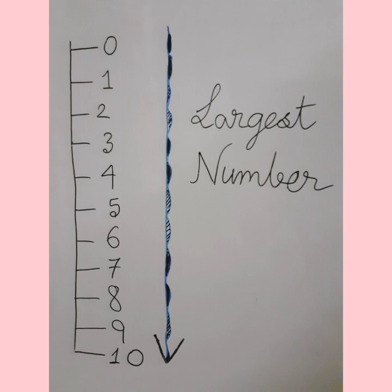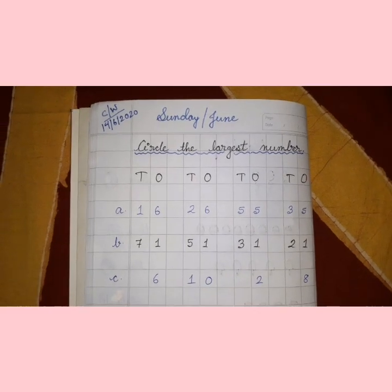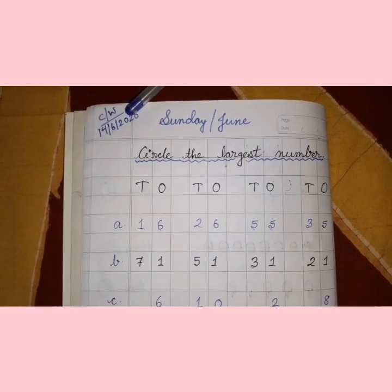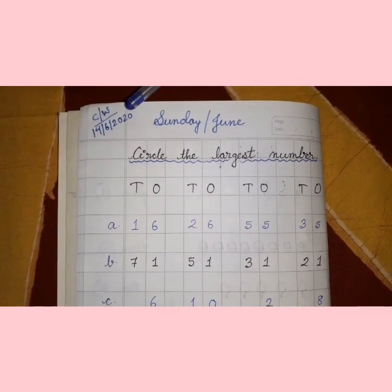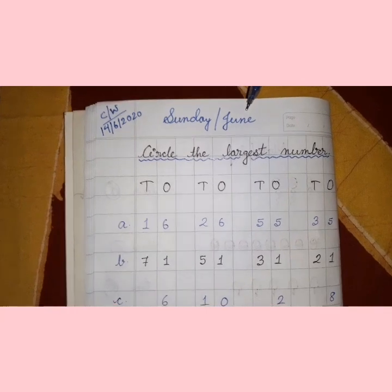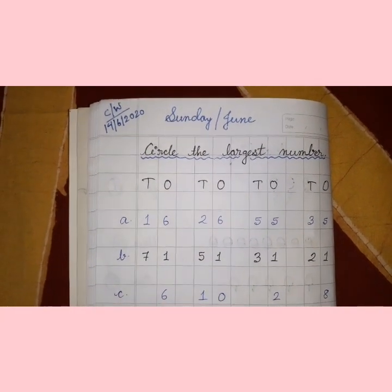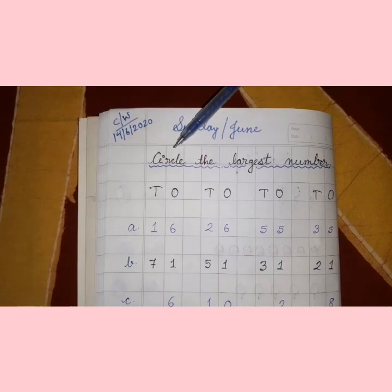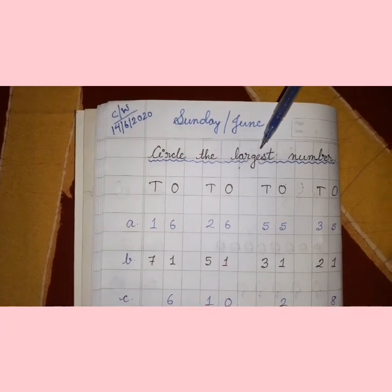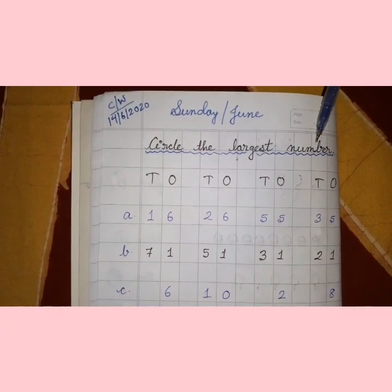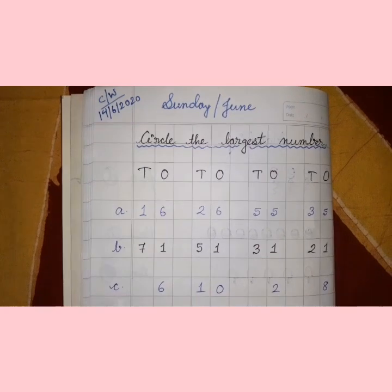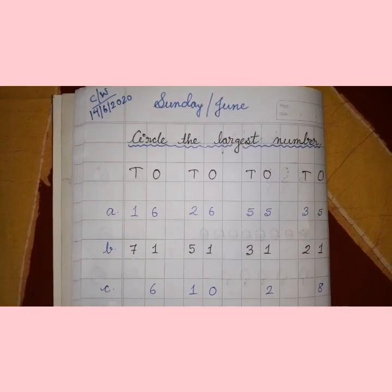Now students, let's continue with our classwork. Write the CW date, then the day and month — please don't skip this part. Now let's read the heading: Circle the Largest Number. So here you have to circle the largest number.